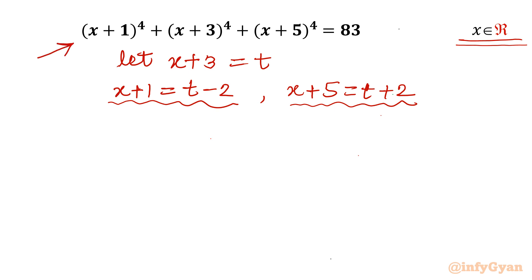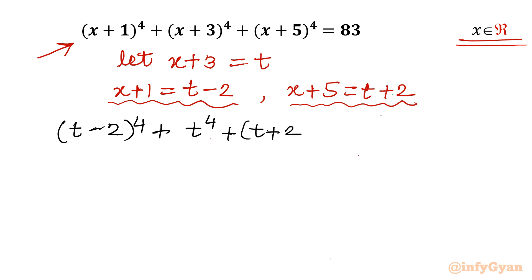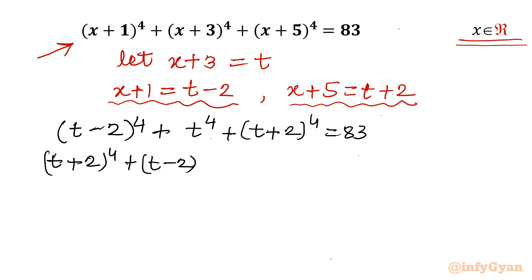So our equation will become (t−2)⁴ + t⁴ + (t+2)⁴ = 83. Now I will rearrange the terms: (t+2)⁴ + (t−2)⁴ + t⁴ = 83.